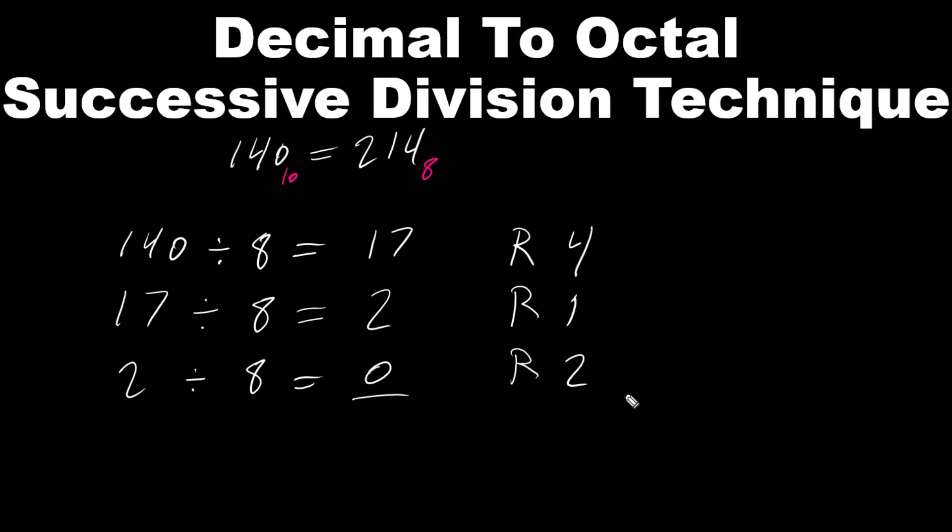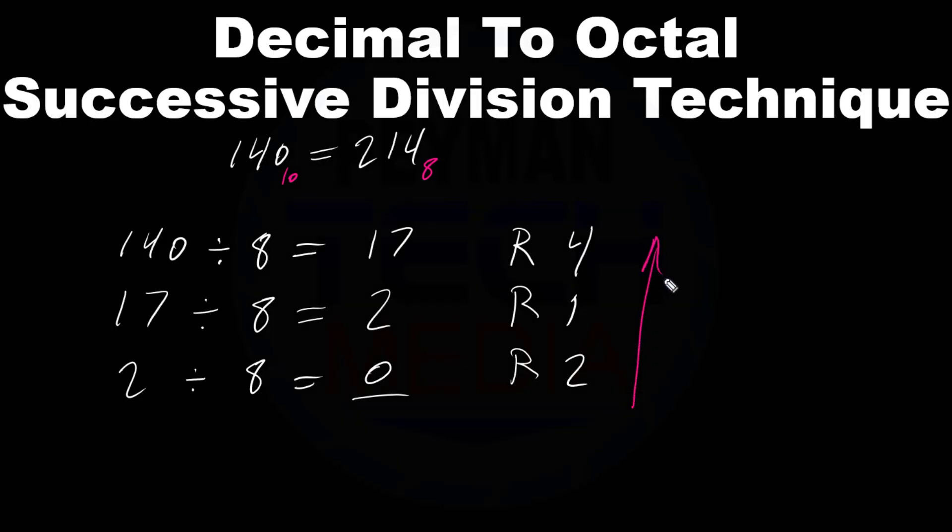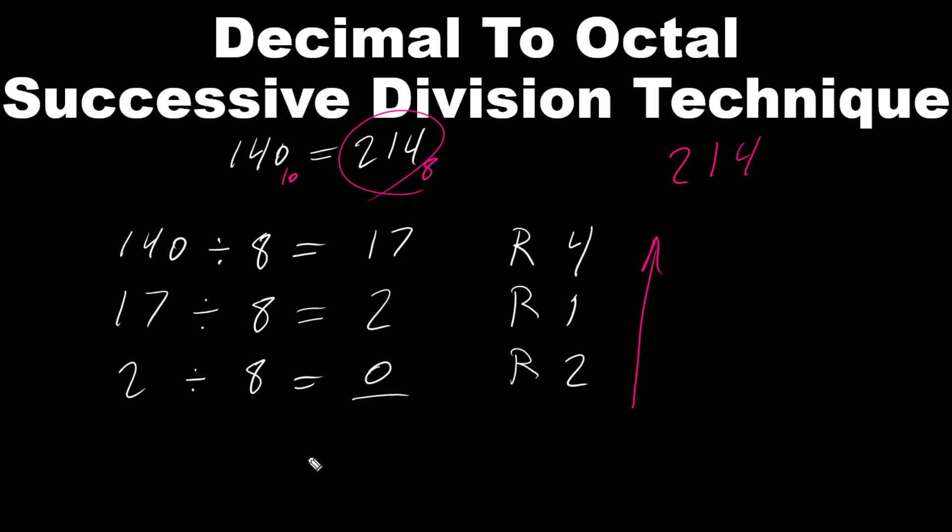We need to read these numbers from bottom to top, which is 214, as we can see here. Therefore, decimal value of 140 is equivalent to 214 octal number.